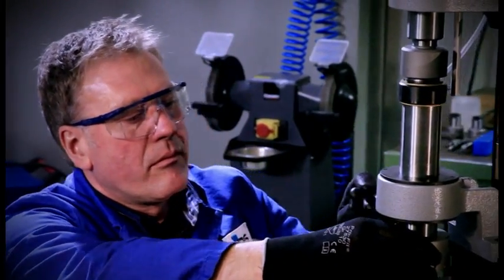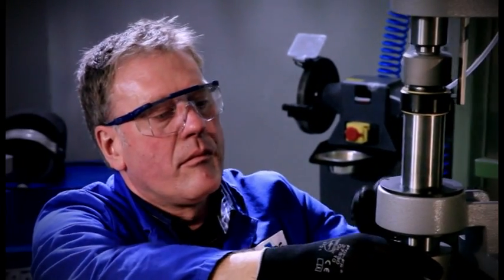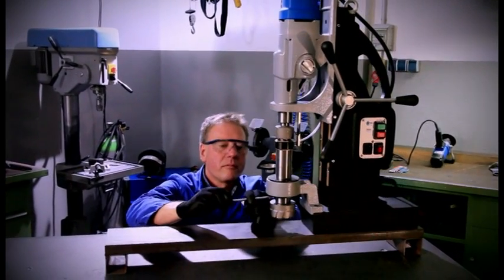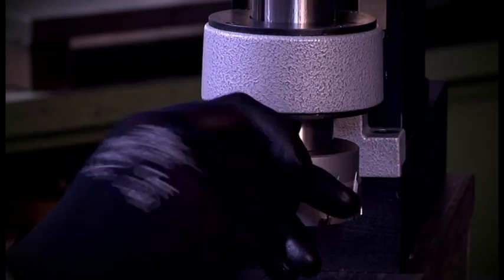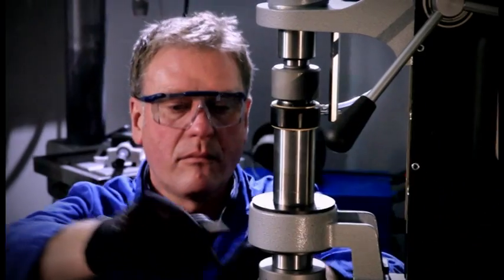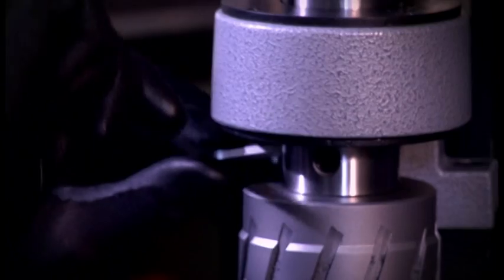The core drill together with the ejector pin is inserted into the director arbor and fixed by means of two clamping screws. For tools with 90mm Weldon Shank, a bushing from Weldon 32 to Weldon 19 is available.